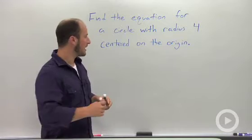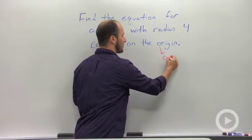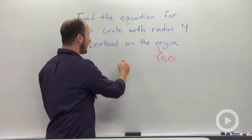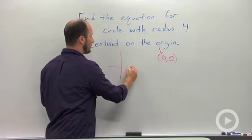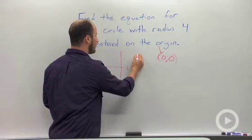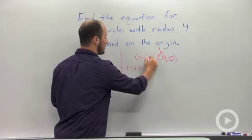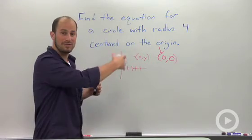We have the origin at the point (0, 0), and we have points that are 4 units away from there. We don't know what a specific point is, we just know it to be (x, y), and we know that the distance from the origin is 4.